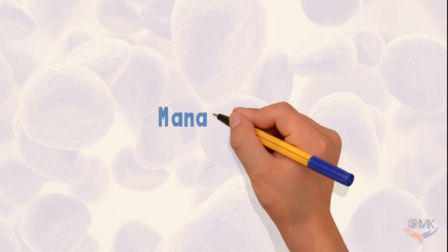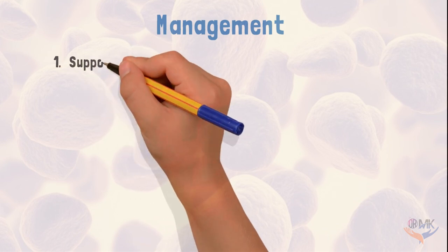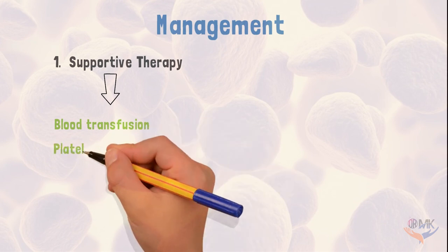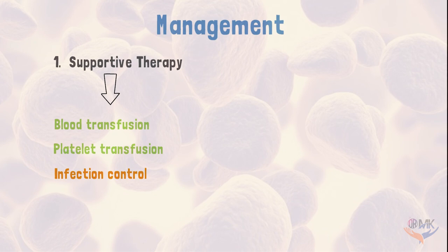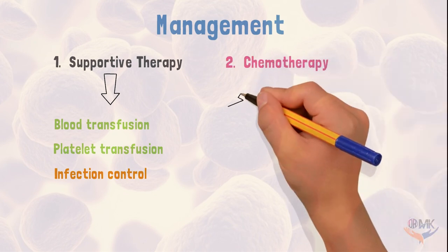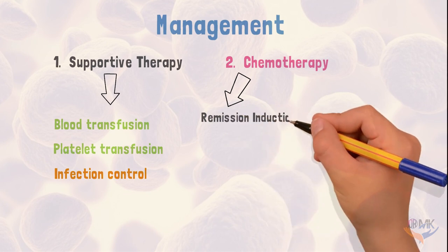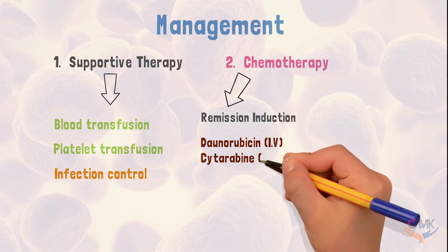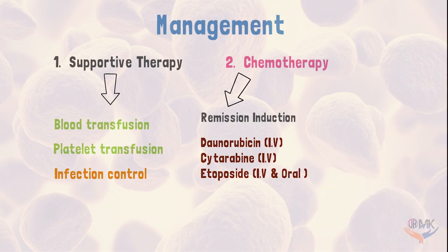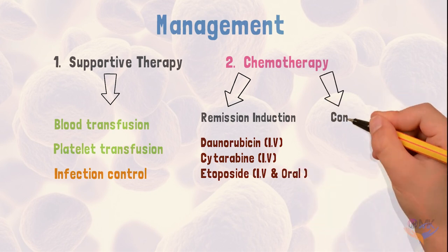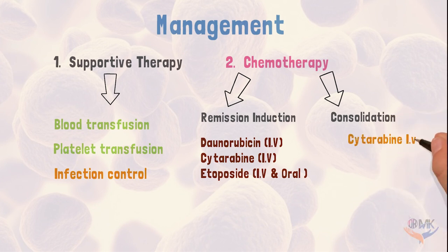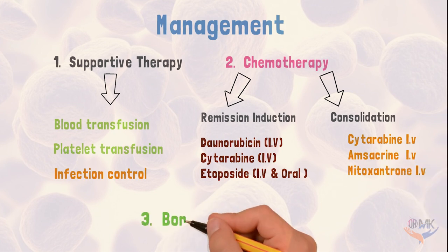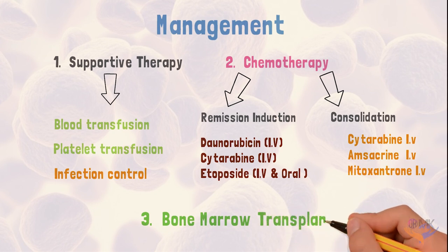Management of acute myeloid leukemia includes supportive therapy consisting of blood transfusion, platelet transfusion, and infection control. Chemotherapy is done in two phases: the remission induction phase, in which drugs such as daunorubicin, cytarabine, and etoposide are given; and the consolidation phase, in which cytarabine, 6-mercaptopurine, and mitoxantrone are given. If patients do not respond to the above therapy, bone marrow transplant is done.